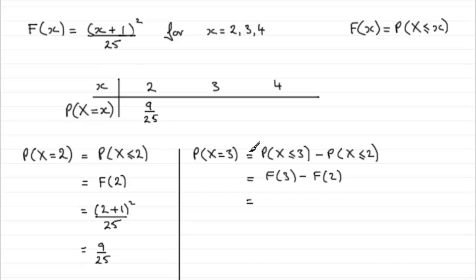And f of 3, we can just put that in here, 3 add 1, 4, 4 squared is 16, 16 over 25. 16 25ths minus f of 2. Well, f of 2, we've already got is 9 25ths. So 16 25ths minus 9 25ths is going to be 7 25ths. So there you go, 7 25ths. Pop that one in there.